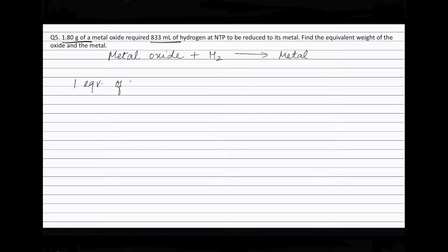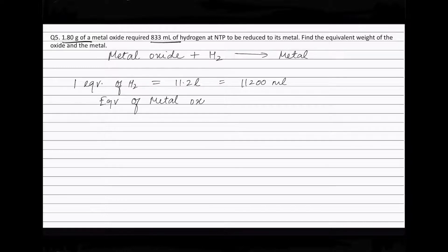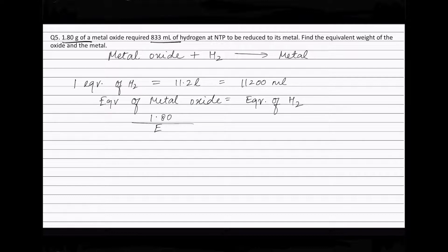One equivalent of hydrogen occupies 11.2 liters, or in milliliters, 11200 milliliters. Equivalents of metal oxide equals equivalents of hydrogen. So: weight of metal oxide (1.80) divided by equivalent weight of the metal oxide (E) equals volume of hydrogen (833 mL) divided by 11200 milliliters.